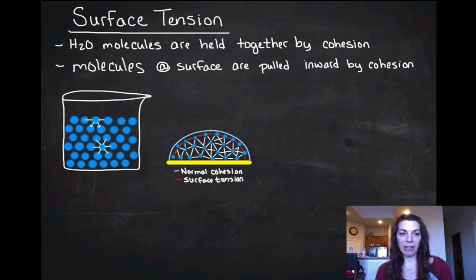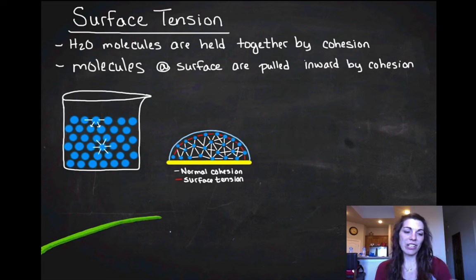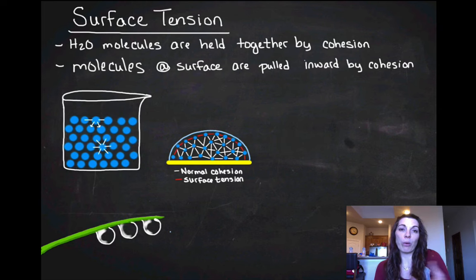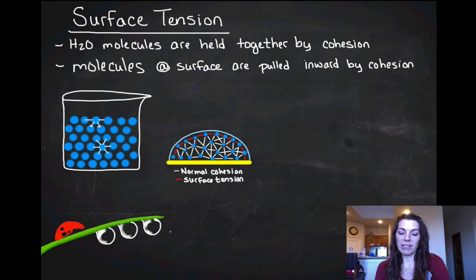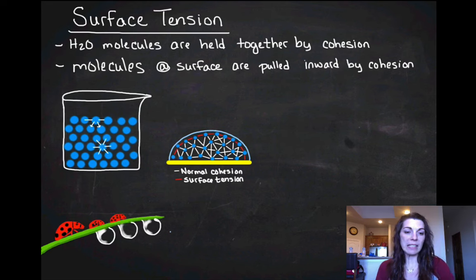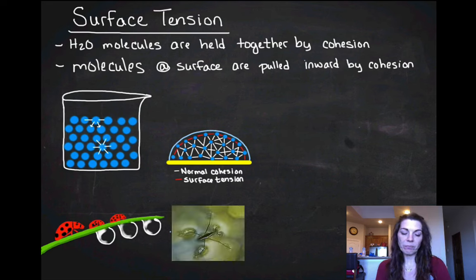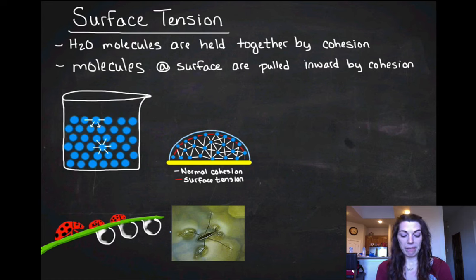Why do we care in biology? Surface tension is biologically important because it keeps water in droplets, and water droplets matter — how water moves and how raindrops form are all important. Insects and other aspects of the food web depend on the cohesive nature of water; for example, water striders can walk across water because of surface tension. That covers cohesion, adhesion, and surface tension.